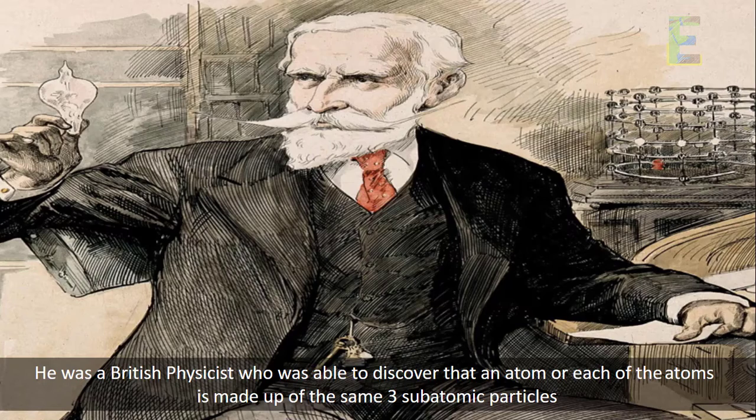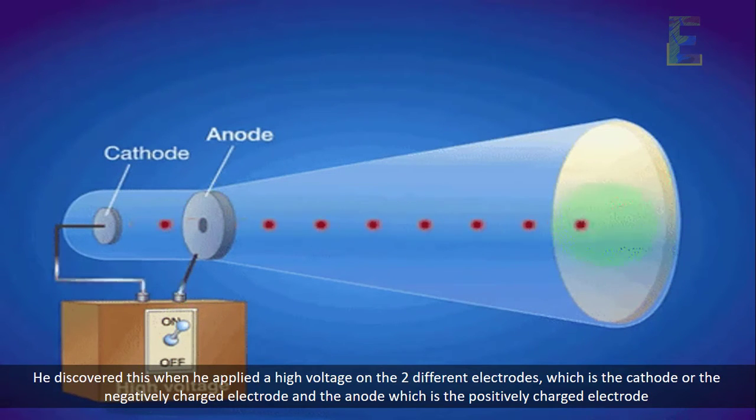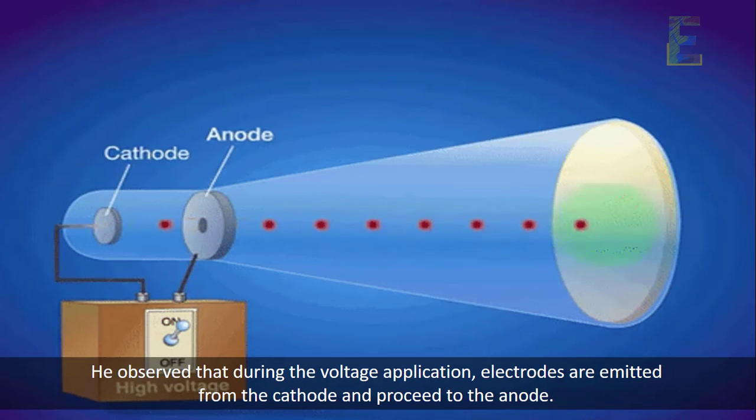He discovered this when he applied a high voltage on the two different electrodes, which is the cathode or the negatively charged electrode, and the anode, which is the positively charged electrode. He observed that during the voltage application, electrons are emitted from the cathode and proceed to the anode.